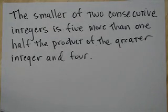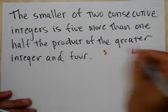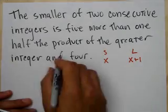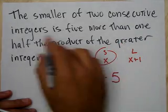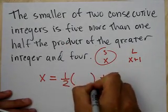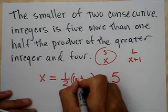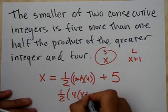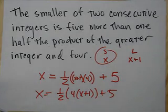And finally, just to set up the equation for this one. The smaller of 2 consecutive integers is 5 more than half the product of the greater integer and 4. So I have 2 consecutive integers. We'll call this small and large. We'll call this one x, and this guy, 2 consecutive integers, x plus 1. So the smaller x is 5 more than 1 half the product, 1 half a product of the greater, which is x plus 1, and 4, which is probably better if I did 1 half, 4, x plus 1, plus 5. And solve that. Wow, that was tough. So anyway, that is your consecutive integers in a nutshell. Enjoy.